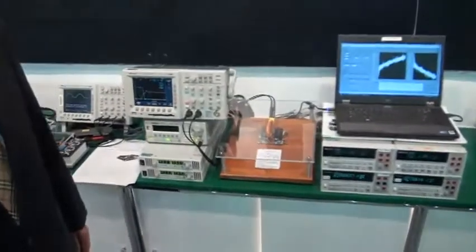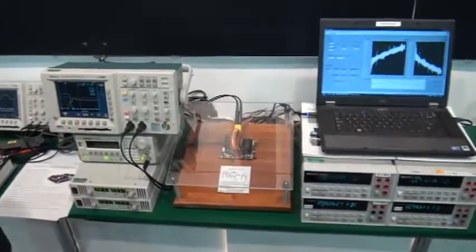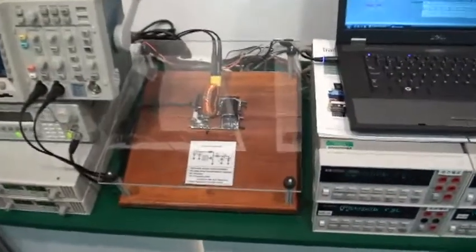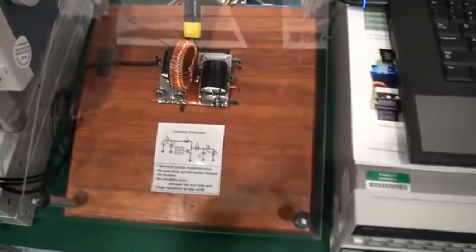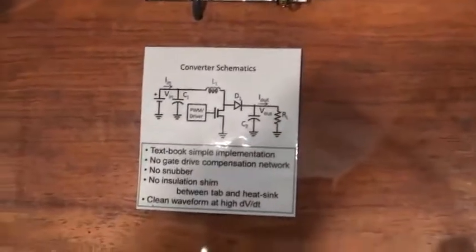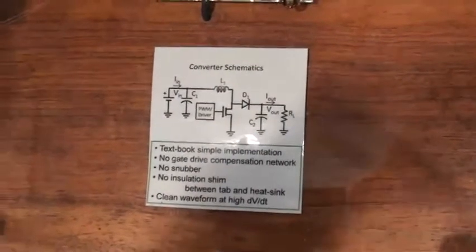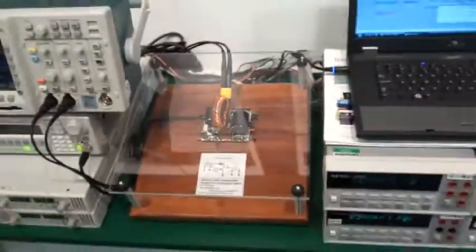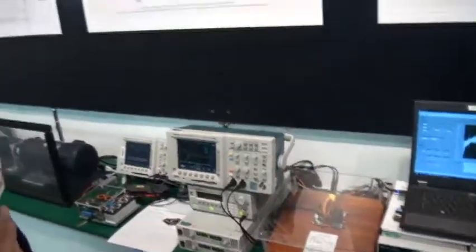Today we have a demo here in the booth showing 1200 volt gallium nitride on silicon devices working in a boost circuit from AC to 800 volts output. We're boosting the circuit, stressing the parts with 800 volts, to demonstrate how much margin there is on gallium nitride on silicon devices.